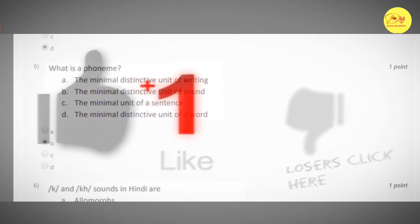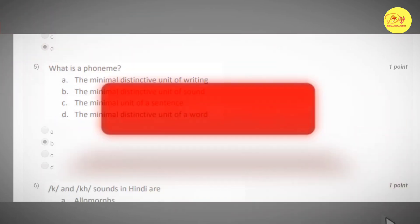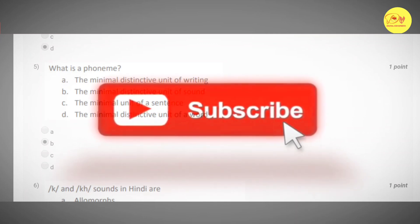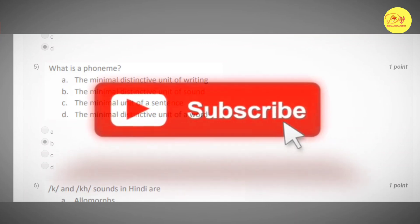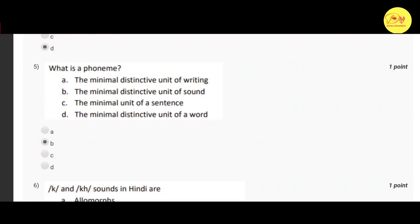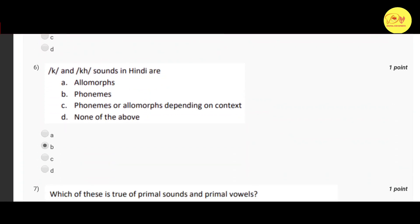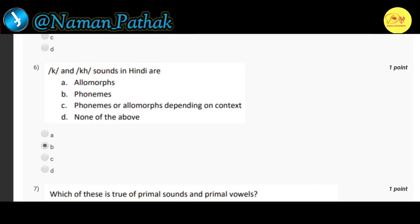Next question: what is a phoneme? The correct option is B — the minimal distinctive unit of sound. Our next question: the \K\ and \KH\ sounds in Hindi are? The correct option is B — phonemes.